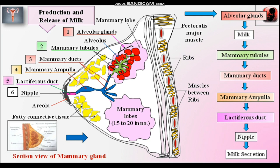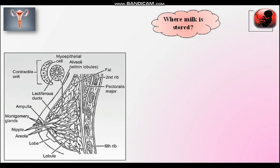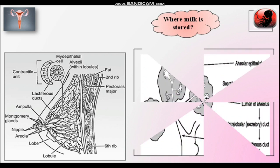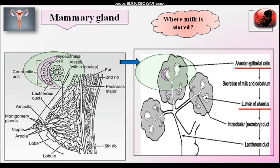How milk secretion is regulated will be on the next slide. Milk is stored in the alveolus. In the previous slide we already studied mammary lobes — in each mammary lobe there are alveolar glands, and each alveolus is made up of epithelial cells. In the center there is a small lumen in which the milk is stored.